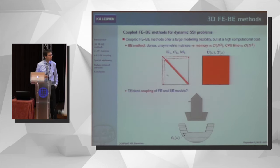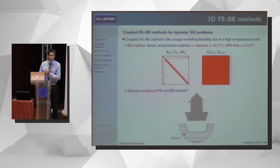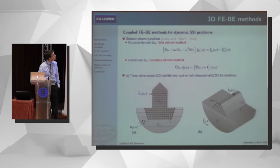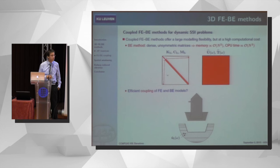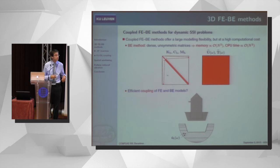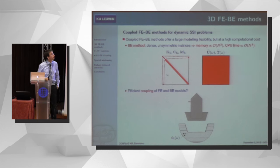This is a very elegant approach, as it allows us to have a detailed model of the structure and account for wave propagation in the soil. Unfortunately, it comes at a high computational cost. The boundary element part is often the bottleneck because the matrices relating tractions and displacements on the boundary are dense, unsymmetric matrices — completely different in nature from finite element formulations where you have sparse symmetric matrices. The memory requirement to store these dense matrices grows quadratically with problem size, and the computation time to solve the corresponding equations with a direct solver like Gaussian elimination scales cubically, which becomes prohibitive for large-scale problems.